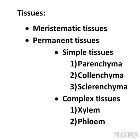In this chapter we are going to learn about tissues. Last year we learned about tissue types. There are two types of tissues: meristematic tissues and permanent tissue.